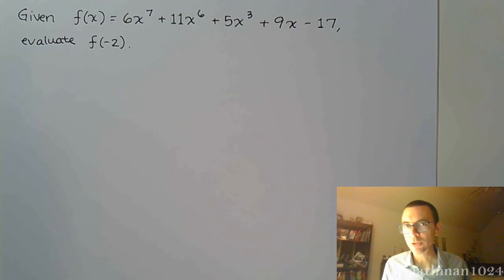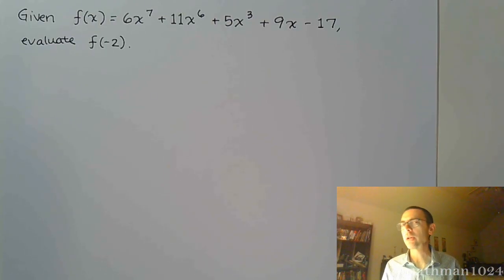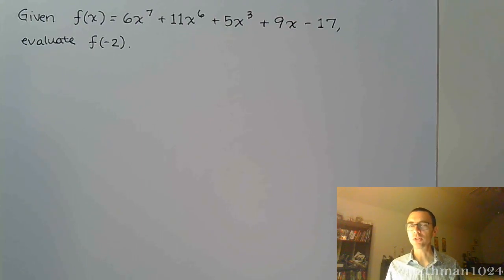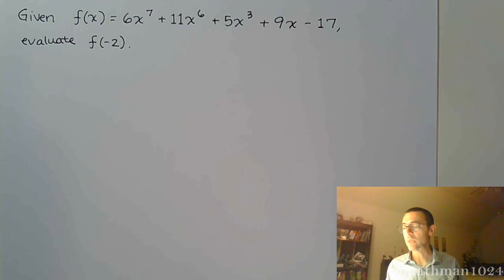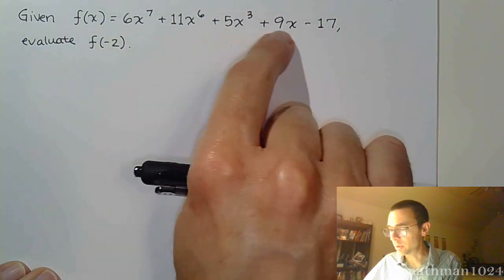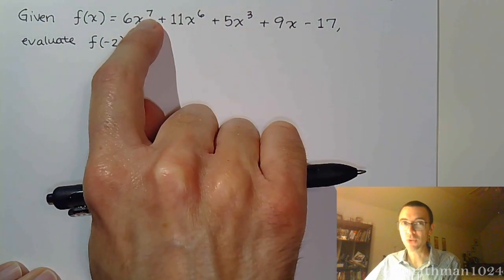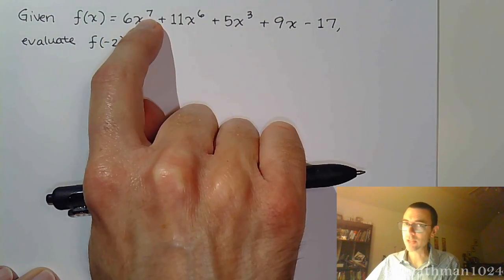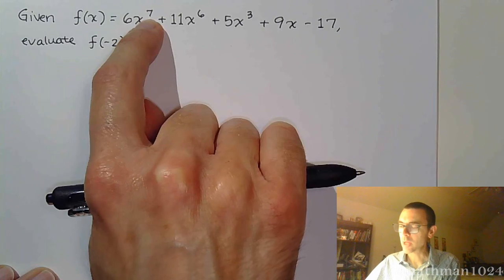Now we're down to the last problem. It's got a few little tricks to it. You need to make sure that you're paying very close attention using all of the stuff that we've talked about for synthetic division. So we've got this big polynomial — it goes up to degree 7, so you know that's going to be fun.